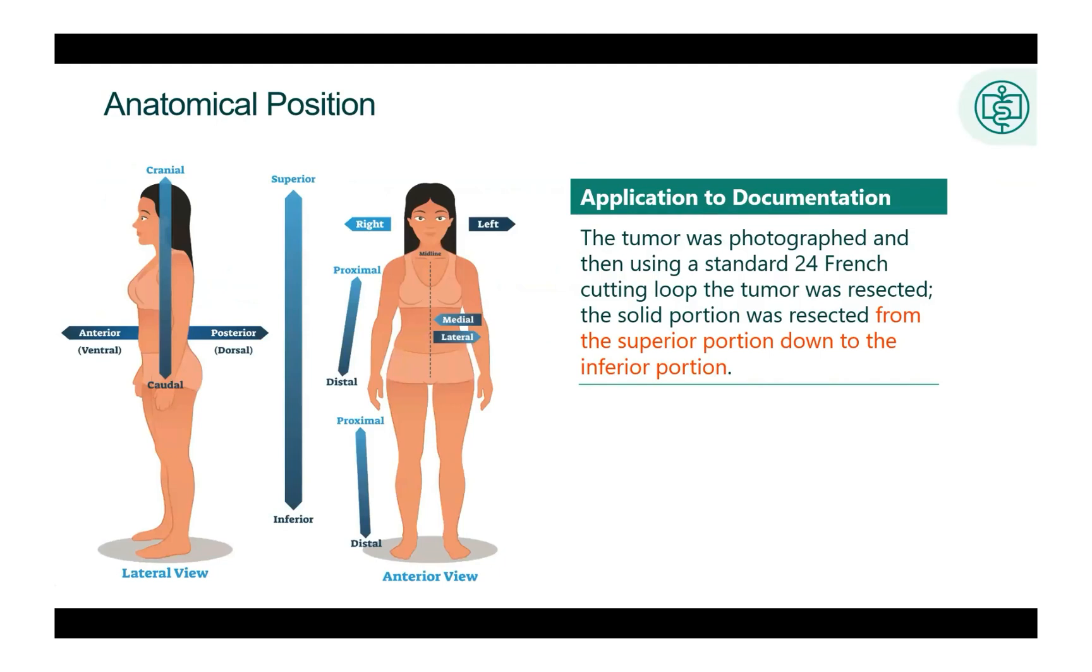Healthcare personnel use a standard form for body directions and orientations. The standard body position is considered the anatomical position. The anatomical position is an upright face forward position with the arms by the side and the palms facing forward. The feet are parallel and slightly apart. This position is used when talking about directional terms in medical documentation. In this medical documentation, it states that the resection was from the superior portion, which is towards the head, down to the inferior portion, which is toward the feet. Understanding directional terms will help when interpreting medical record documentation.